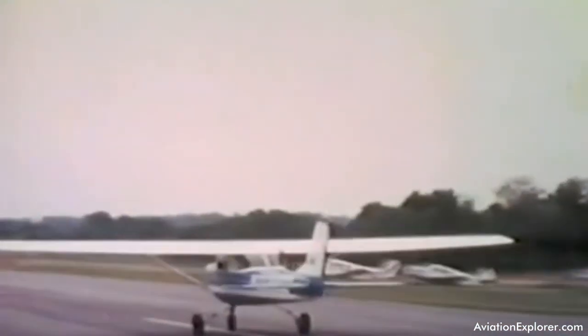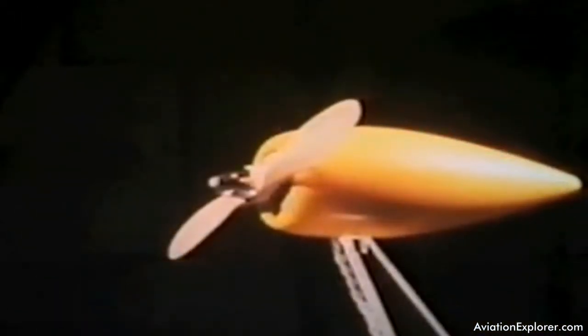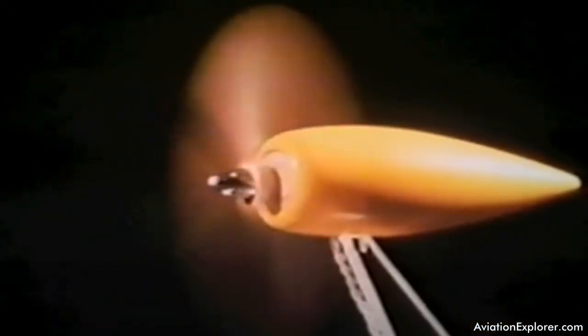First, we need a force to make the plane go forward and create the relative wind. This is called thrust. Since thrust is another of the major aerodynamic forces, we'll tag it with a symbol representing a propeller and an arrow. Thrust is generated by an engine which exerts the force to move the aircraft forward.